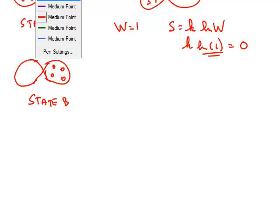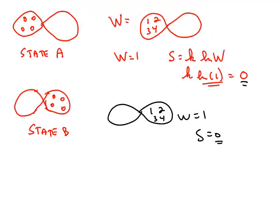If we do this for state B, which is all four particles end up on the right side of the container, there's still only one way to get to that point. So the entropy is equal. In other words, if you did this experiment and opened up the gate between the left side and the right side and came back after an hour, if you obtained state A or state B, both of them would be equally likely because they both have the same value for the entropy. They're both equally random.